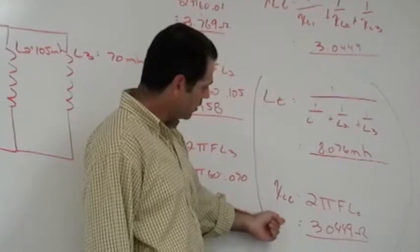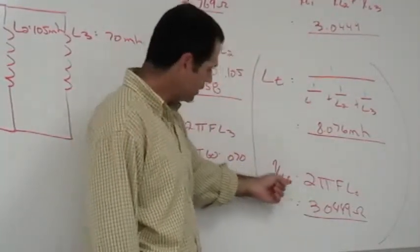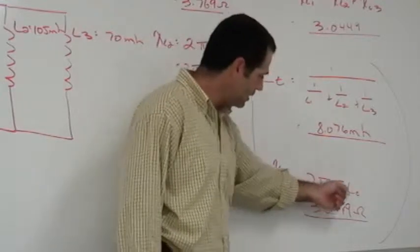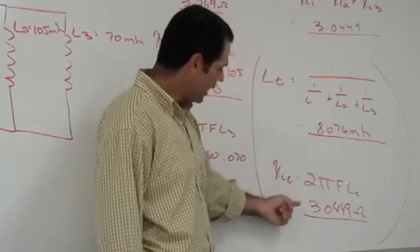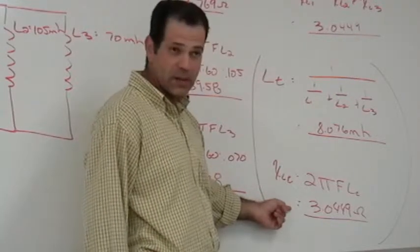Plug that into our total inductive reactance formula, 2πFL. In this case, it's 2π times 60 times this value. We got an ohmic value of 3.0449 ohms.